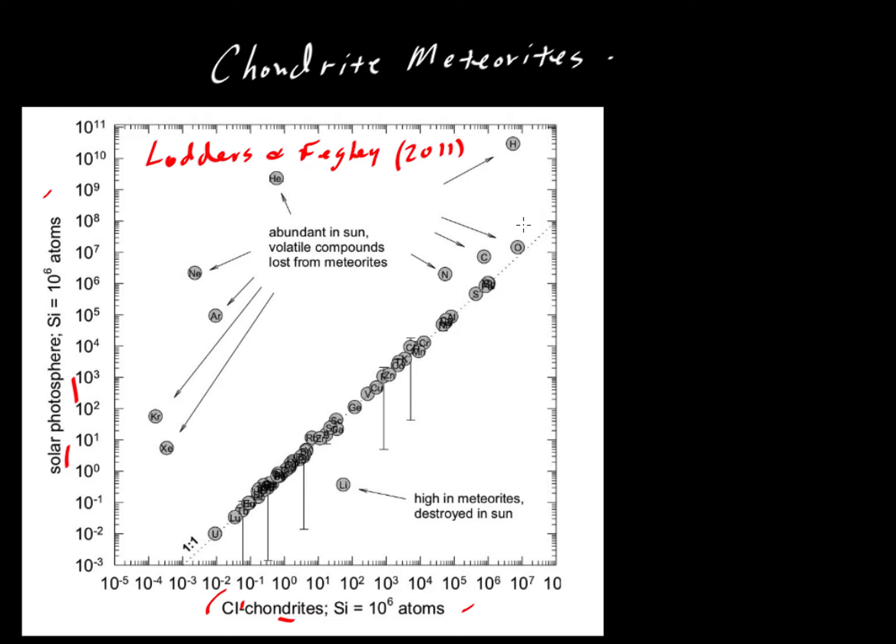There are a couple of elements that fall off this line. Notice that up here we have hydrogen. Hydrogen is at a much higher concentration, close to 10 to the 10. When we look at this, it's per million atoms of silicon. It has a much higher concentration by orders of magnitude compared to less than 10 to the 7th in the actual rock. That's not very surprising. Chondrite meteorites have lost some hydrogen relative to the Sun.